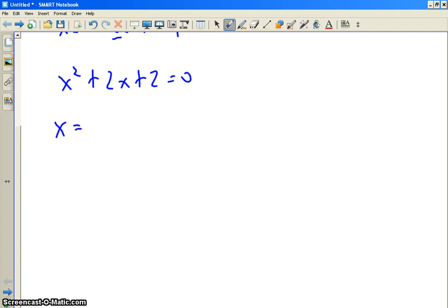Alright, so x equals negative b, this coefficient is 1, that's a, this coefficient 2, that's b, and this coefficient 2, that's c. So negative b plus or minus the square root of b squared,